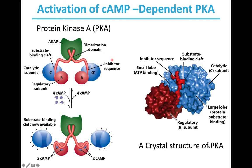A crystal structure of PKA is shown here. Part of the R2C2 complex — one C subunit and part of the R subunit — is shown. This is an experimentally determined structure of the protein complex. The blue-colored region is the catalytic subunit, the red-colored region is the inhibitory sequence bound to the substrate-binding cleft, and the dark red-colored region is one of the regulatory subunits.